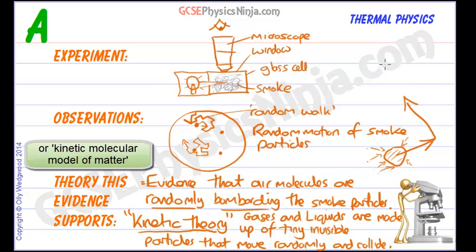You can actually put pollen grains onto water. And this is actually the way which I think Brown, the scientist, actually observed these pollen grains. He looked down with a microscope on the pollen grains and he saw that they were doing this dance, this random walk, just like these smoke particles in the smoke cell here. So, the kinetic theory is saying that gases and liquids are made up of tiny invisible particles that move randomly and collide with objects around them.